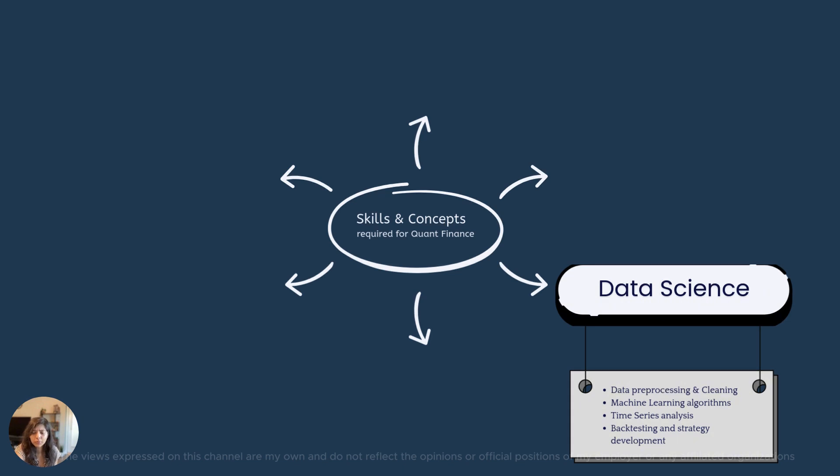Again, these are some of the main examples, but the scope is huge. Backtesting and strategy development is used to test trading strategies on data which is already available. Using historic data, you can test your strategy. This validates the performance of the strategy.